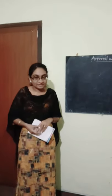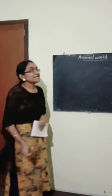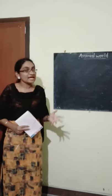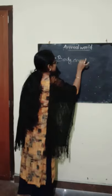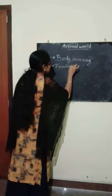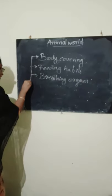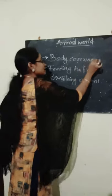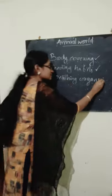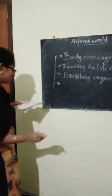Hi students, welcome to our science class. Our chapter name is Animal World. In the last classes, we discussed what is adaptation and different types of adaptation for animals. We learned the adaptations as body covering, feeding habits, and breathing organs. Now, we are going to discuss the last type of adaptation called movement.